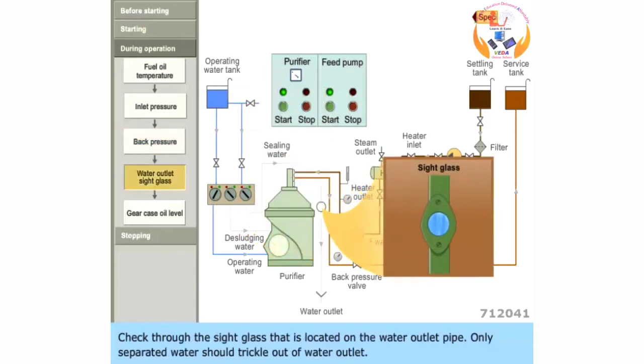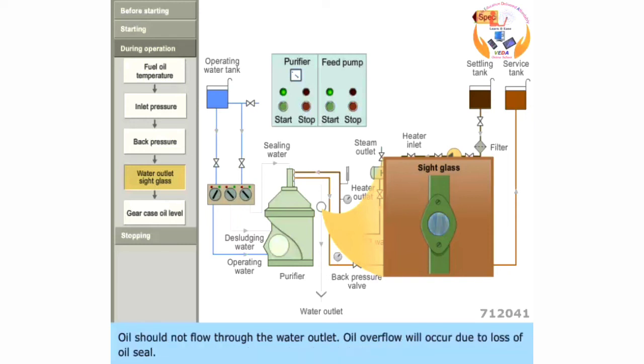Check through the side glass that is located on the water outlet pipe. Only separated water should trickle out of the water outlet. Oil should not flow through the water outlet. Oil overflow will occur due to the loss of oil seal.